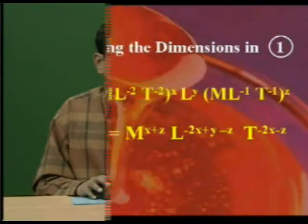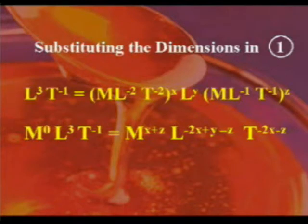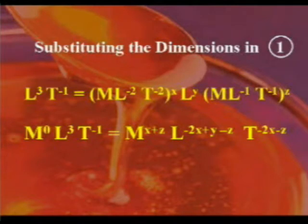Substituting these values into equation 1, we get L³ T⁻¹ equal to (M L⁻² T⁻²) power x, L power y, (M L⁻¹ T⁻¹) power z. Rearranging all these powers, we get M⁰ L³ T⁻¹ equal to M^(x+z) L^(−2x+y−z) T^(−2x−z).